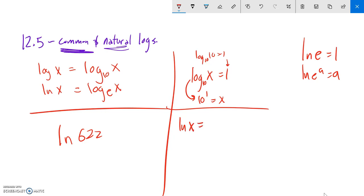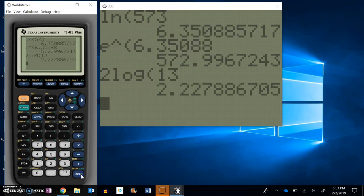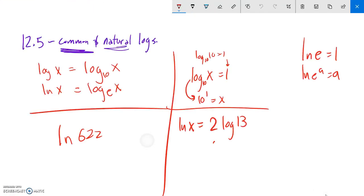Let me do another one. Natural log of x equals 2 times log 13. Interesting, so this 2 log 13 is just a number. I could just figure out what that is on my calculator. Looks like it's about 2.228. I'll do a little bit of rounding here. So natural log of x equals that.